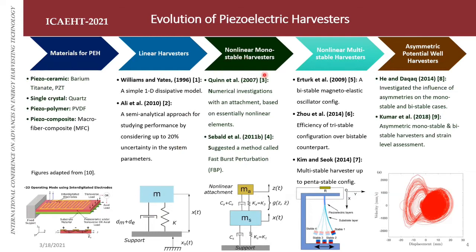Then non-linear monostable harvesters were developed with a non-linear stiffness attachment introducing a cubic term k3 on top of the linear stiffness k1. What this does is skew the resonance peak, which occurs at a particular frequency for linear harvesters, over a broadband range in non-linear monostable harvesters.